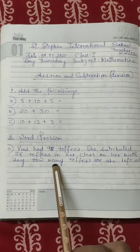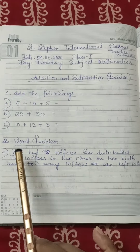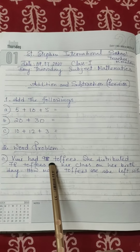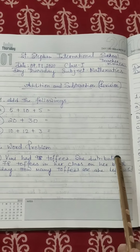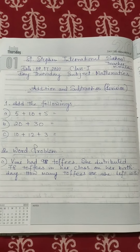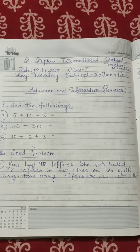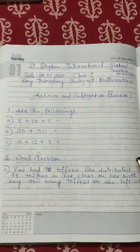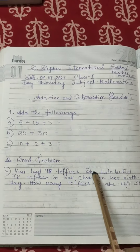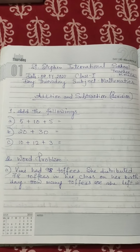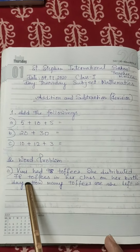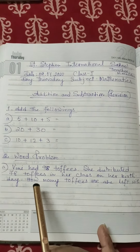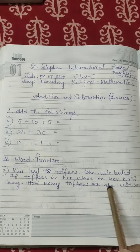And come to the word problem. What is written here? Vinny had 98 toffees. She distributed 78 toffees in her class on her birthday. Means Vinny ke paas 98 toffees tha — she gave 78 toffees to her friends. Friends ko dee diya. How many toffees is she left with?